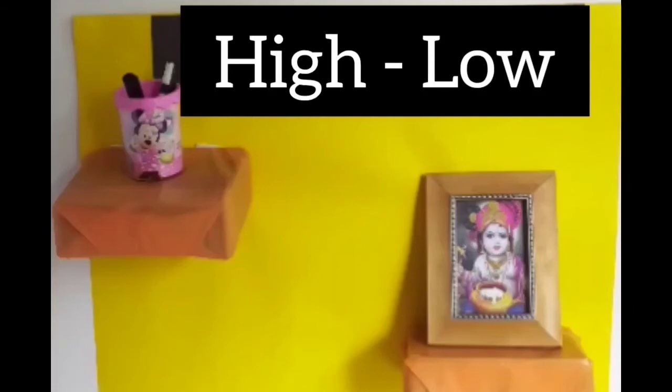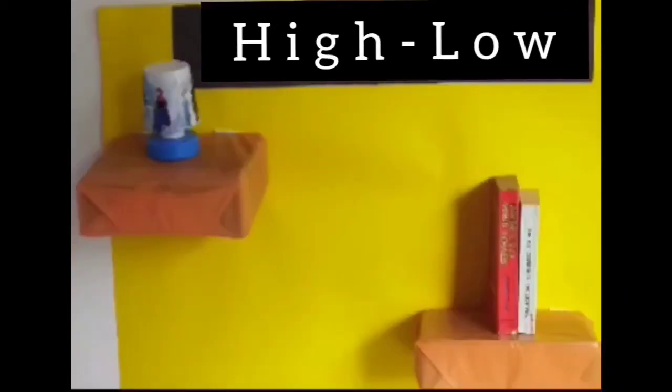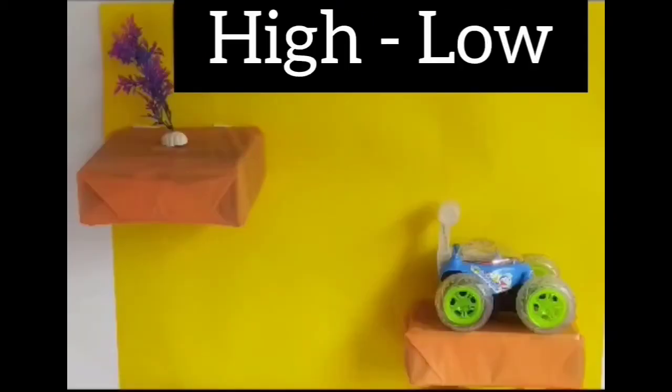Now children, can you see this brown color two boxes? Yes, those are shelves. Now, the night lamp is on higher shelf and the books are on lower shelf. Here, the flower pot is on higher shelf and toy car is on lower shelf.